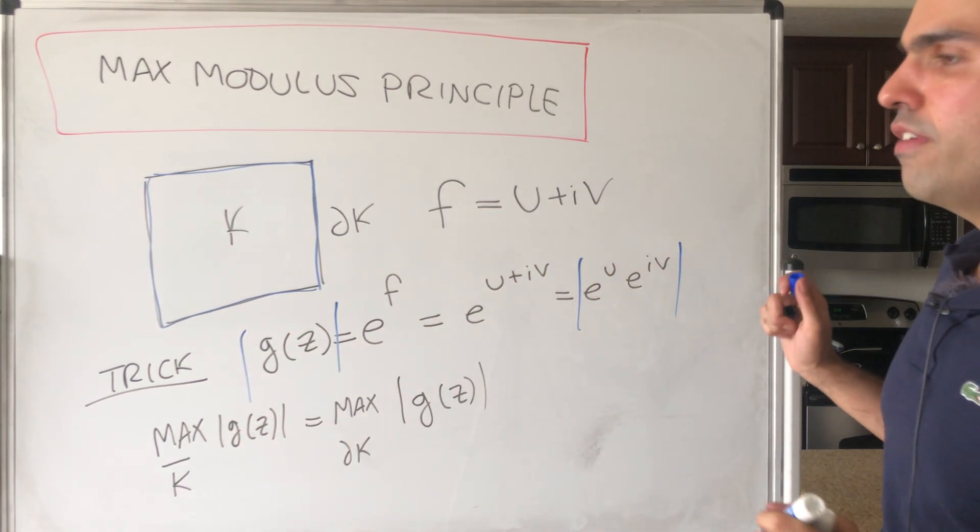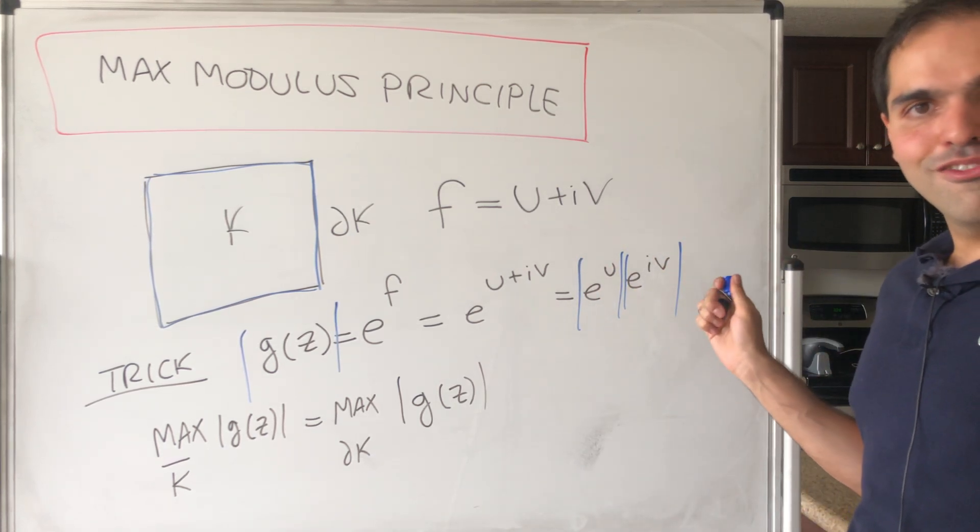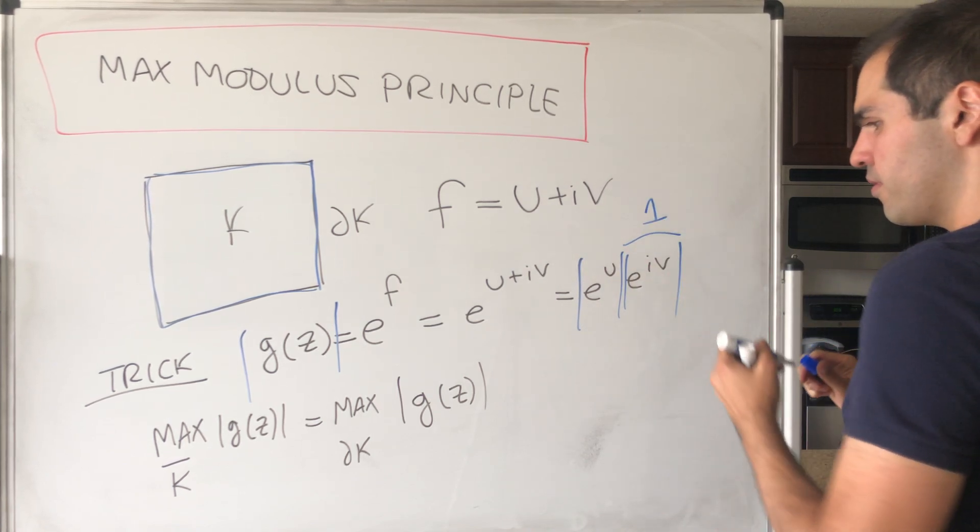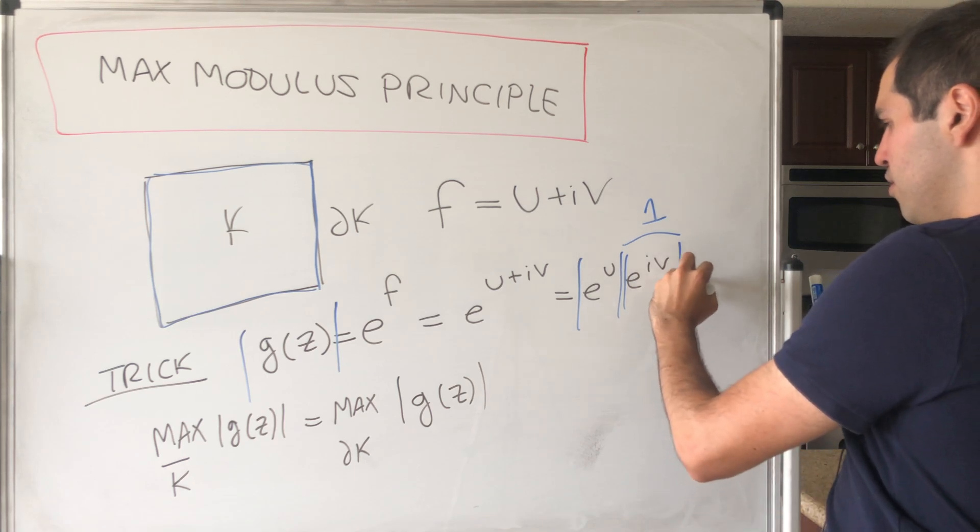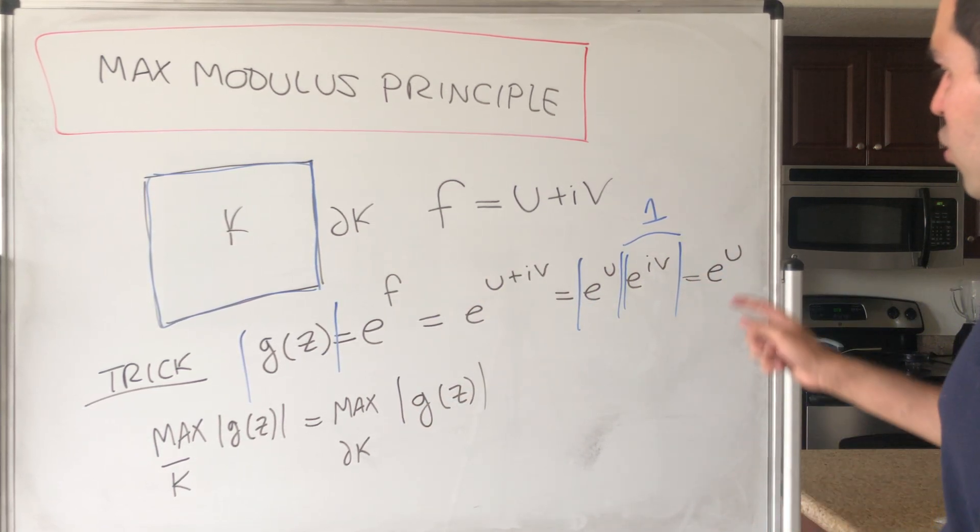Well, it's the absolute value of e^u times e^(iv), but look, e^(iv)—iv is purely imaginary, so this is just one. So absolute value of g(z) is e^u, but here's the thing.